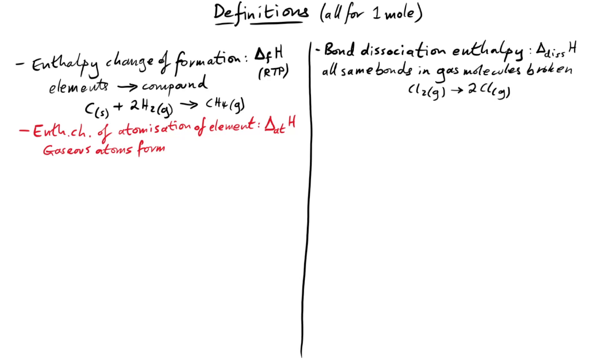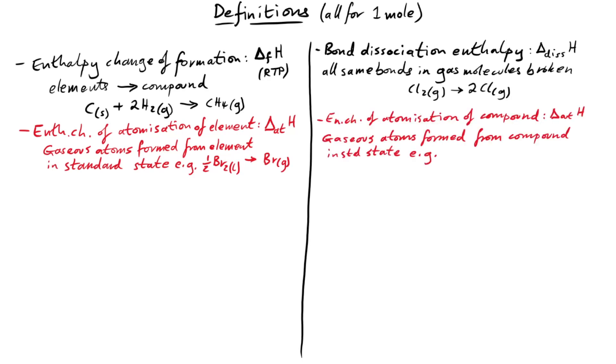We have the enthalpy change of atomization of an element. It's when one mole of gaseous atoms is formed from its elements in standard states. So that's for example, half a bromine molecule and it's liquid, isn't it, at RTP makes gaseous atoms of bromine. And similarly, the other side, we have the enthalpy change of atomization of a compound. It's when one mole of gaseous atoms are formed from a compound in its standard state. For example, sodium chloride turning into gaseous atoms of sodium and chlorine.